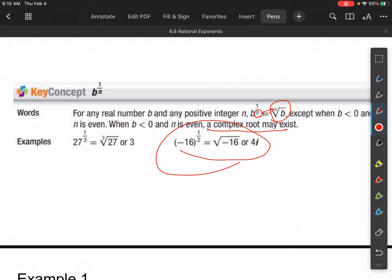So some examples. 27 to the third power is the same thing as the third root of 27, which is 3. Negative 16 to the half power is the same thing as the square root of negative 16, which is 4i.